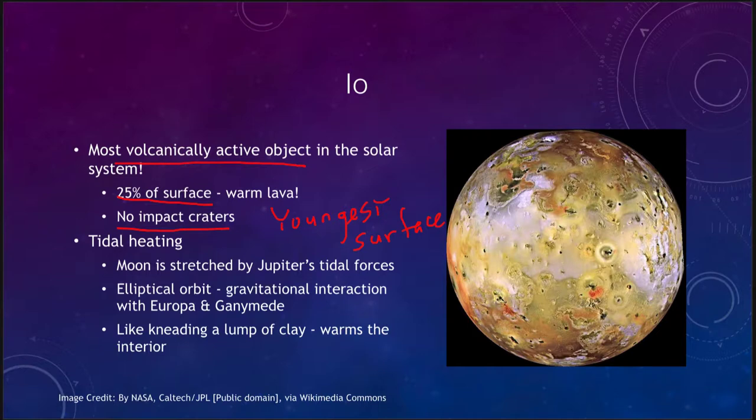Even the Earth has nearly 200 impact craters, and other objects have far more. But of all solid surfaces, Io is the only one known to have no impact craters at all.